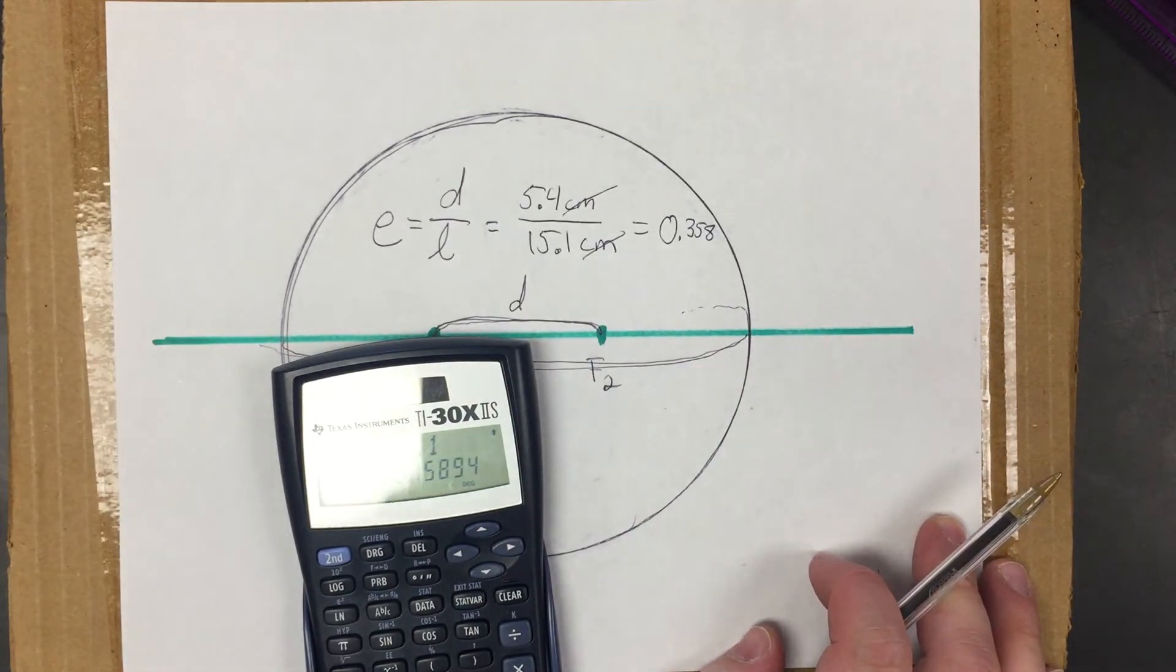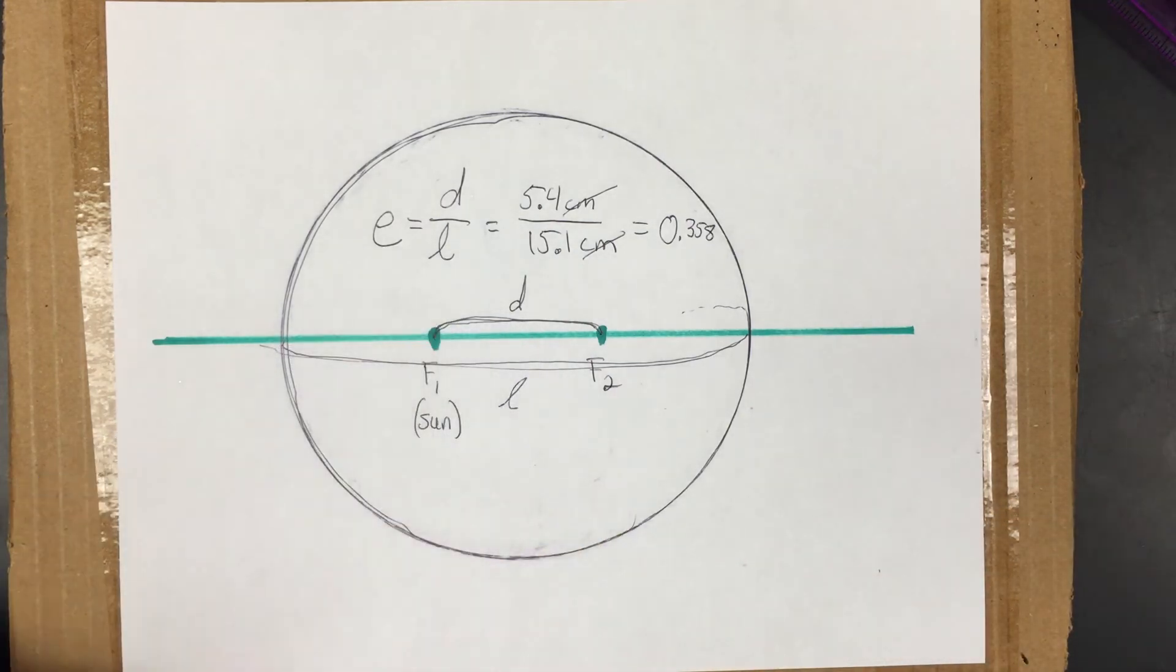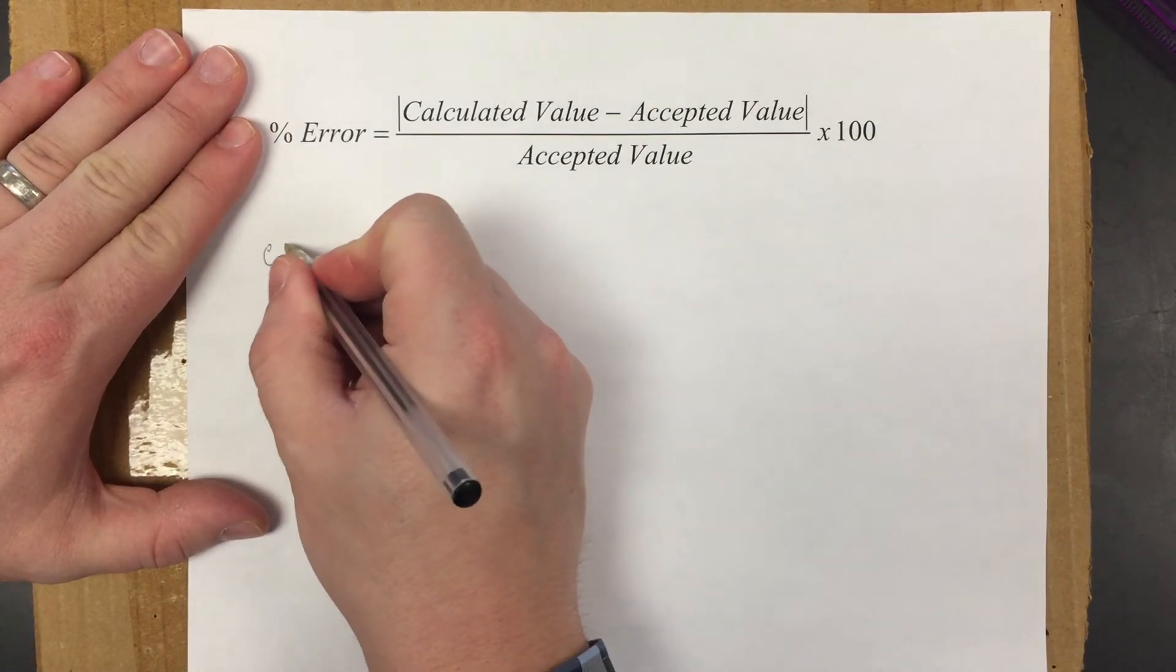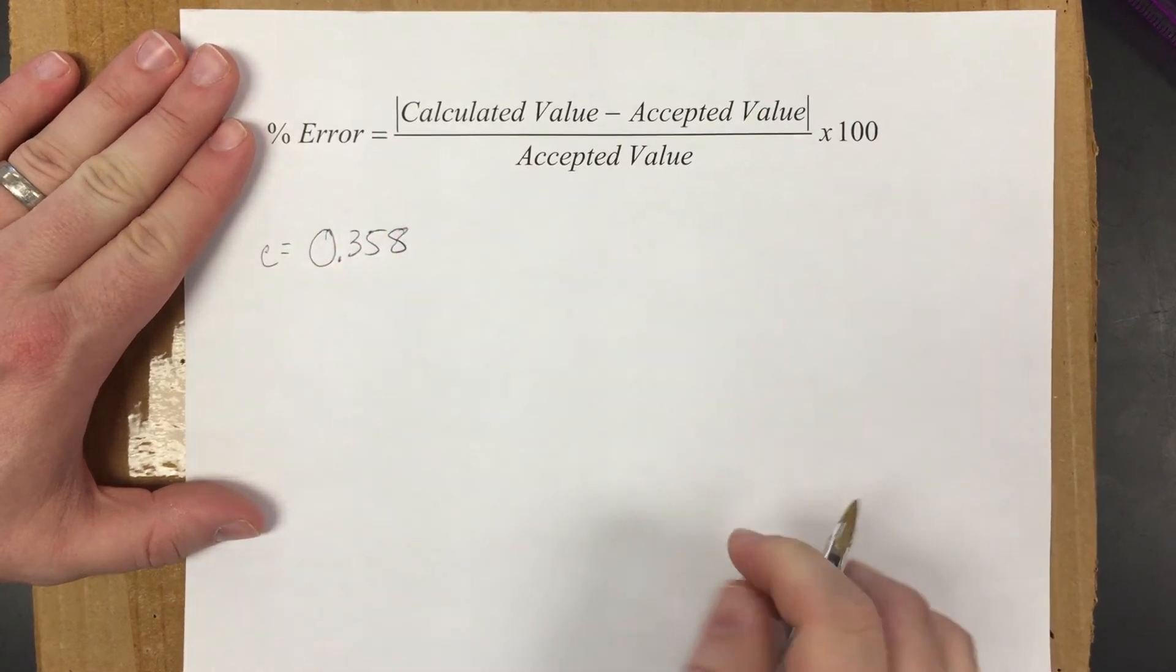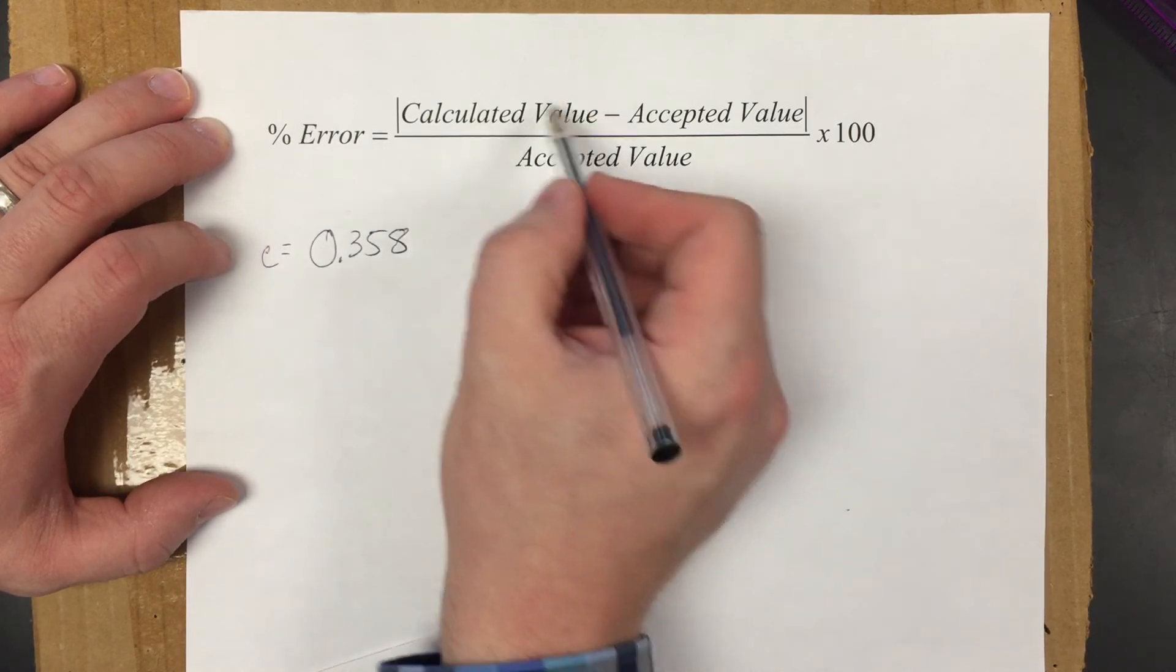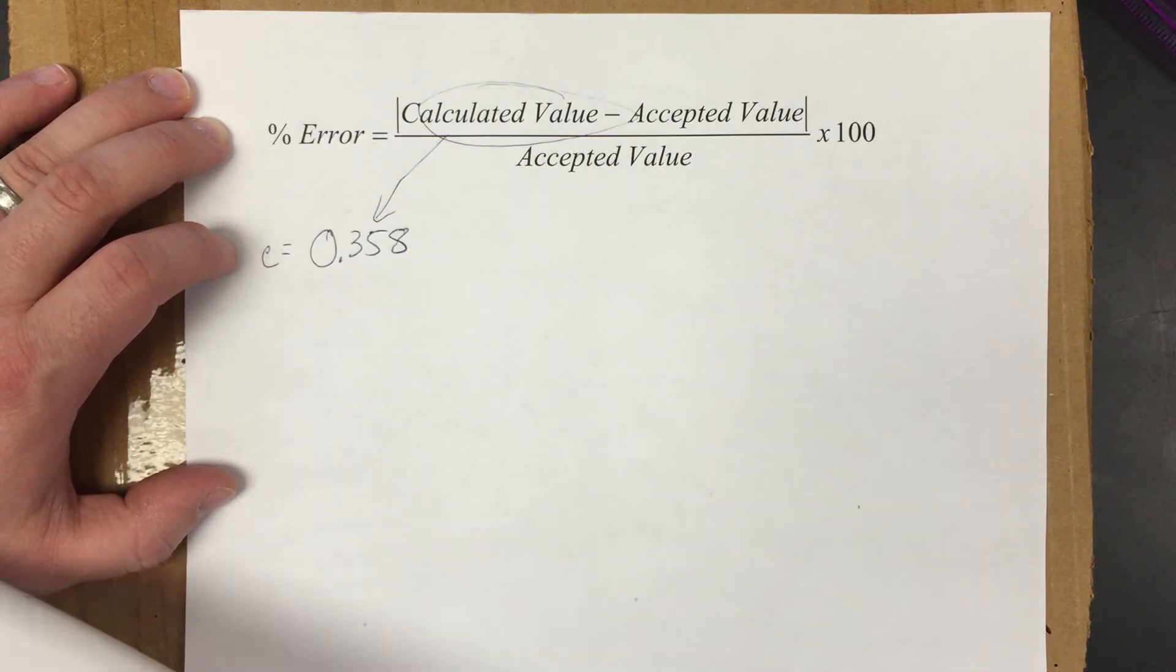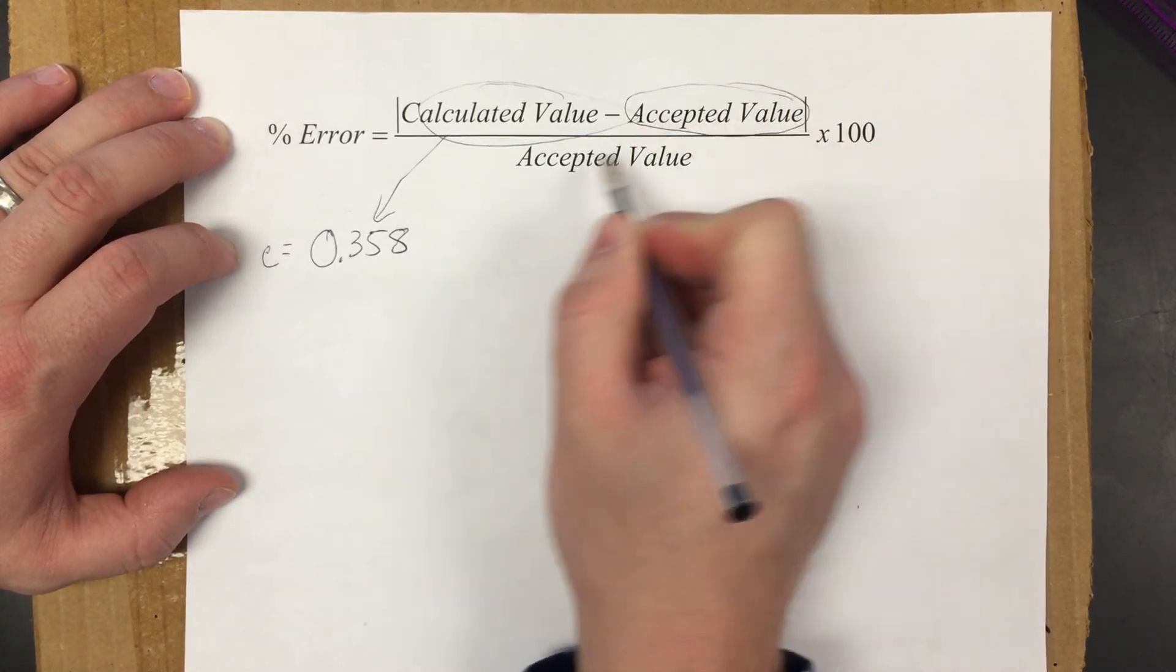The last thing I want to do is calculate how much of an error did I make or how wrong was I? So let's say I'm going to leave my E equals 0.358. Here's my formula for percent error. My calculated value, that's the E that I calculated, the eccentricity that I calculated.